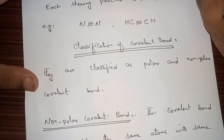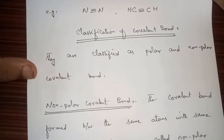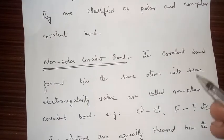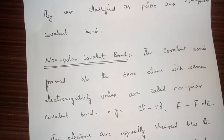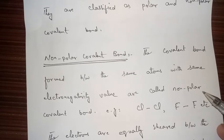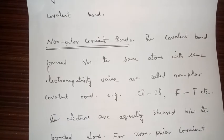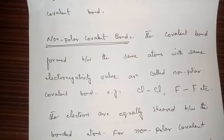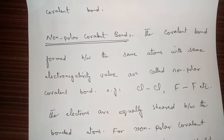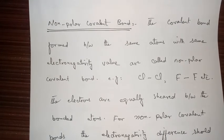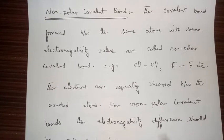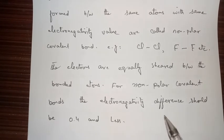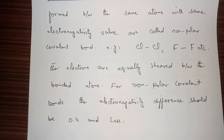Covalent bonds are classified as polar and non-polar covalent bonds. The non-polar covalent bond is formed between the same atoms with the same electronegativity value — for example, bonds between two chlorine atoms, two fluorine atoms, or two hydrogen atoms. The electrons are equally shared between the bonded atoms. For a non-polar covalent bond, the electronegativity difference should be 0.4 or less. If the electronegativity difference is more than 0.4, the bond will be polar.